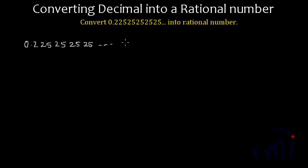So this number actually can be written as 0.2 and 25 is repeating itself infinite times. That means we can put this bar only over 25. And this extra 2 we have over here.